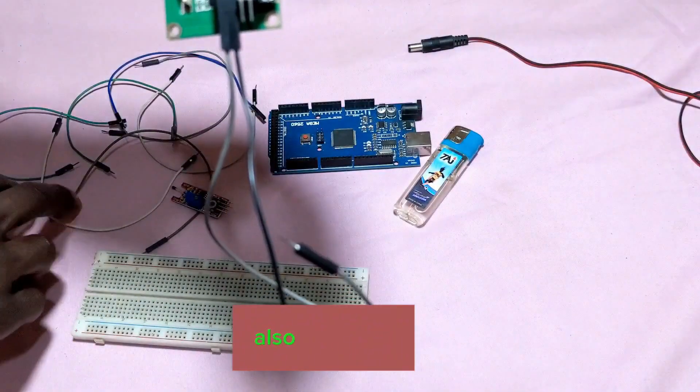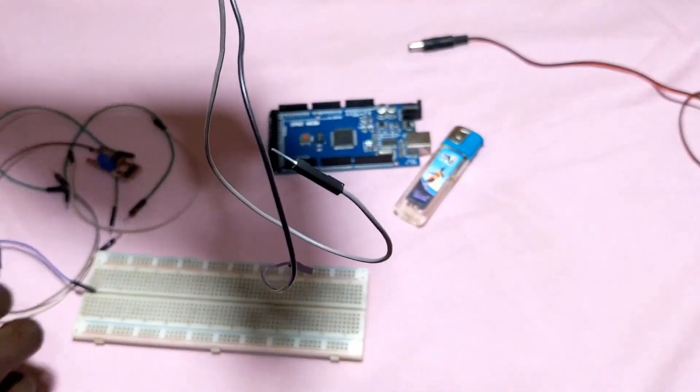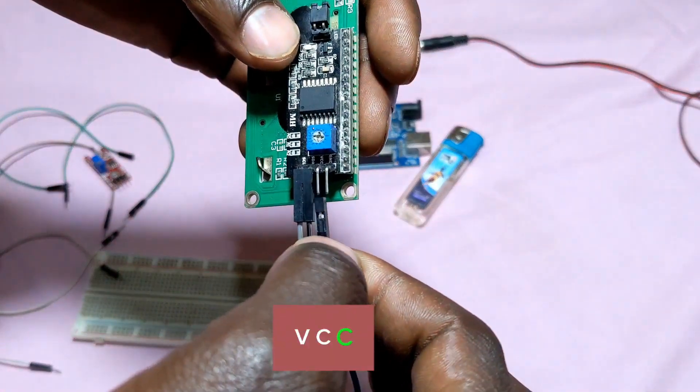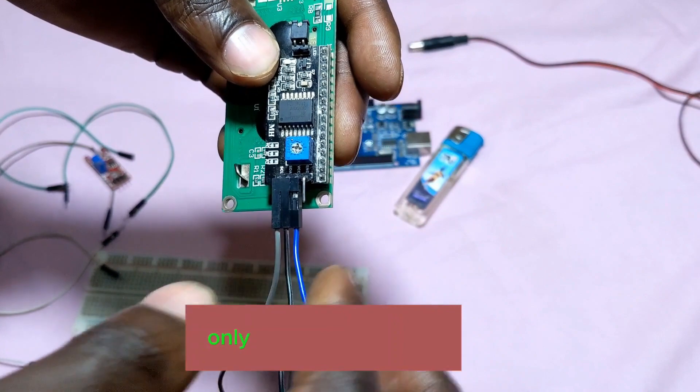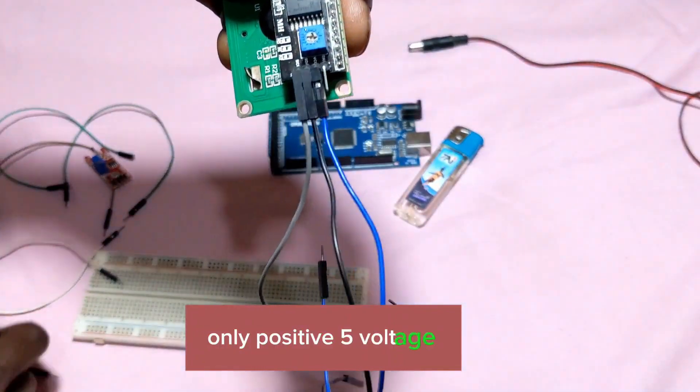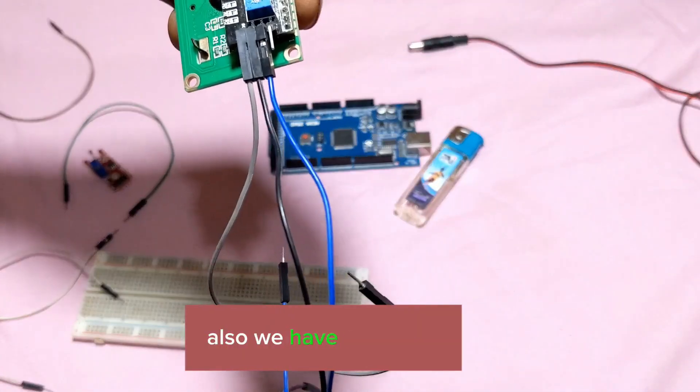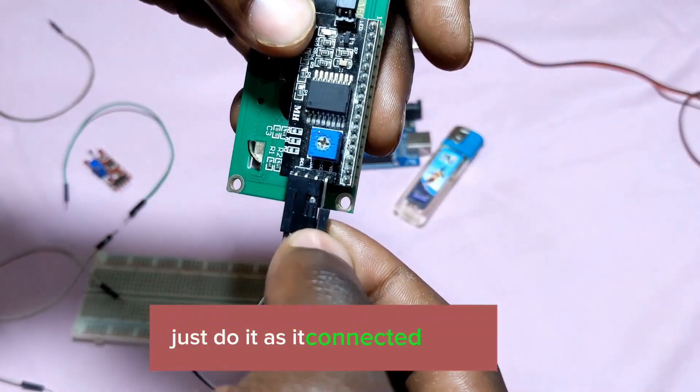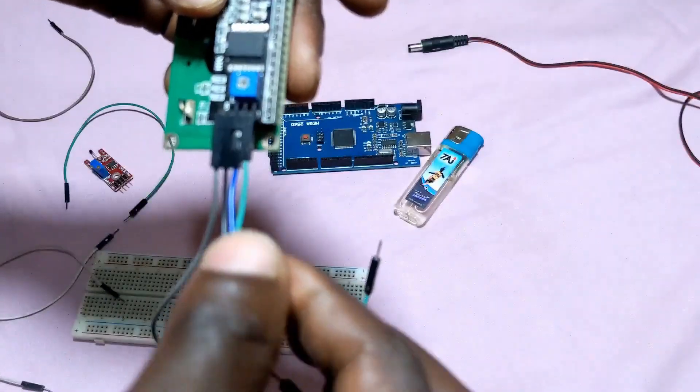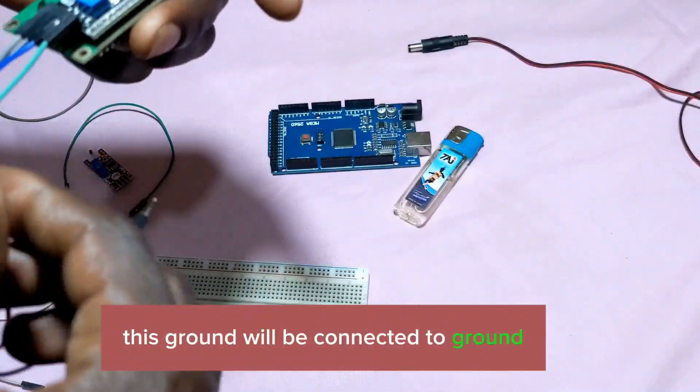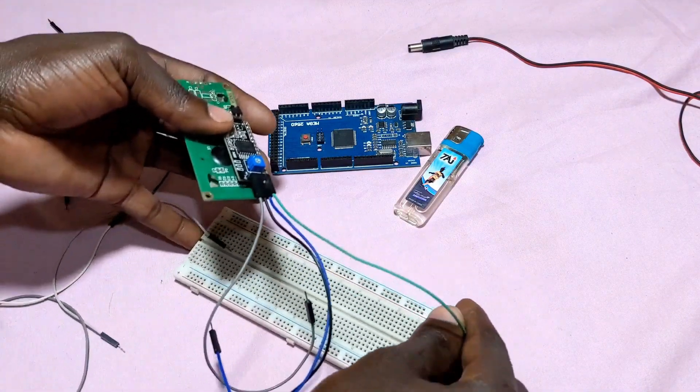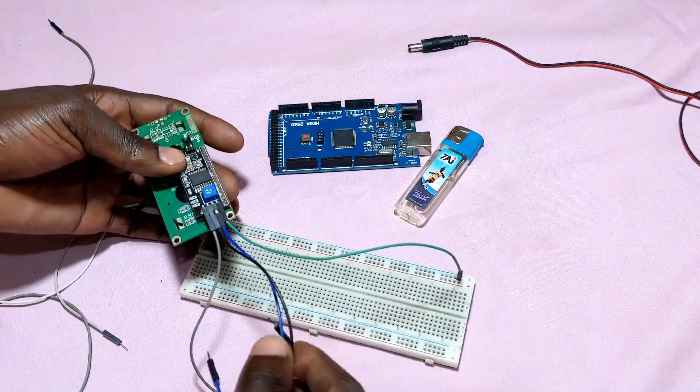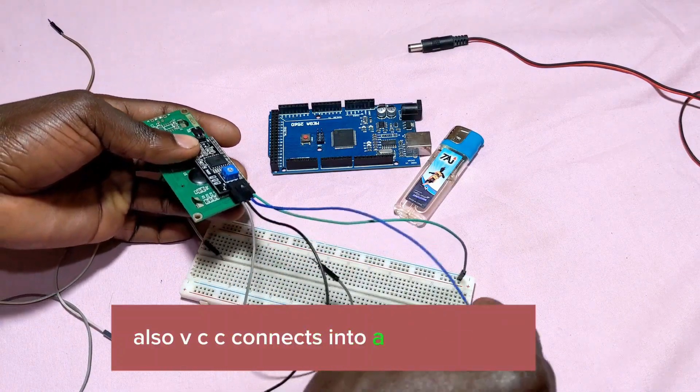You also have VCC for positive five voltage, and we have ground. This ground will be connected to ground on our breadboard. See, this is the breadboard and this will be ground. VCC connects to the breadboard as well.